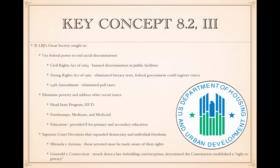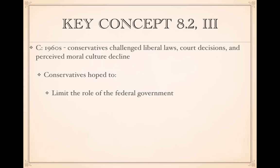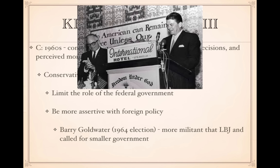In the 1960s, conservatives began to challenge liberal laws, court decisions, and a perceived moral and cultural decline, marking the rise of the right. Conservatives hoped to limit the role of the federal government and be more assertive in foreign policy. Barry Goldwater ran against LBJ in 1964 calling for smaller government. Ronald Reagan gave a famous speech called 'A Time for Choosing' that launched his political career — and many of Reagan's conservative ideas can be traced back to Barry Goldwater.